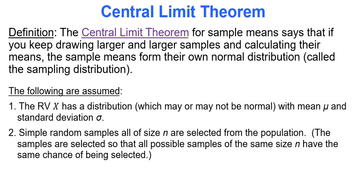By definition, the central limit theorem for sample means says that if you keep drawing larger and larger samples and calculating their means, the sample means form their own normal distribution called the sampling distribution.